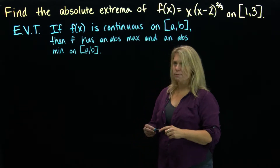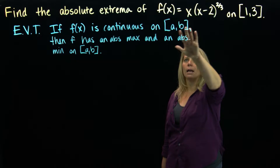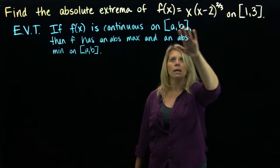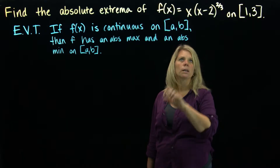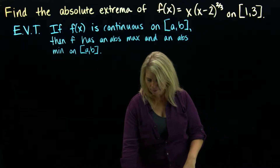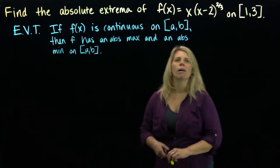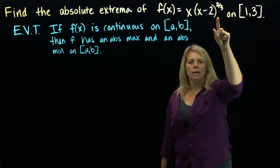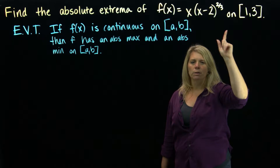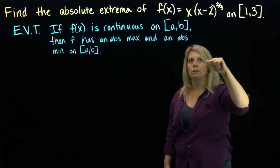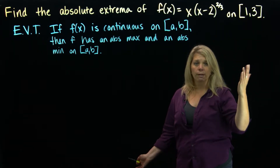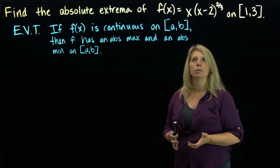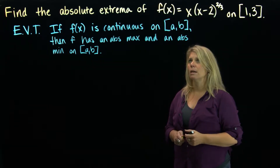We want to think about this function. We clearly have a closed and bounded interval. Our interval is 1 to 3. So we want to think about whether our function is continuous on that interval. One important thing is that when you have fraction exponents, negative exponents, or trig functions, you might want to rewrite that in terms of things that are a little easier to think about.